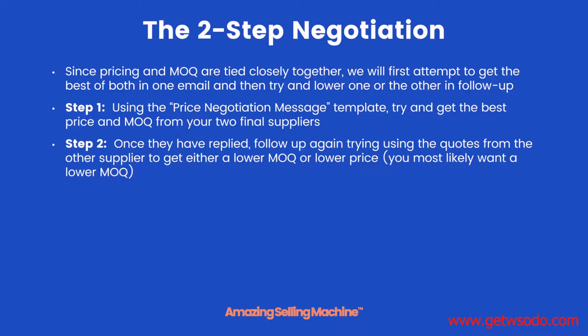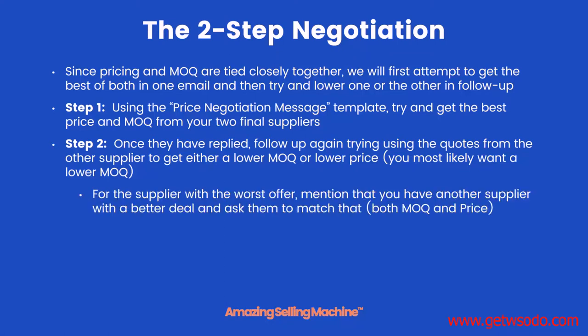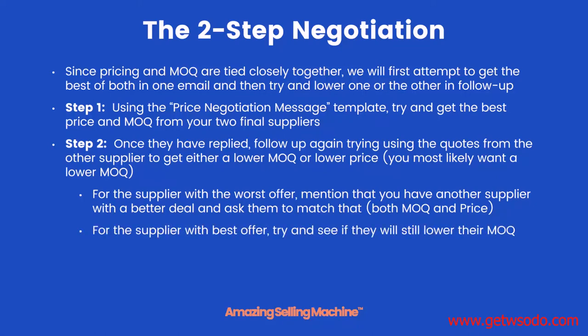Once they've both replied, follow up with both of them again using the quotes from the other to get either a lower MOQ or lower price — and chances are you probably want to lower the MOQ because that's really what's going to bring your costs down on your initial inventory investment. For the supplier who gave you the worst offer, mention that you have another supplier with a much better deal and simply ask them to match it — you can ask them to match both the MOQ and the price. For the supplier with the best offer, you still want to follow back up and see if they'll lower the MOQ to give you a much lower initial investment.